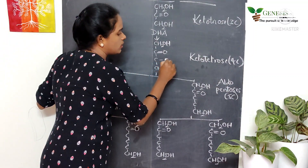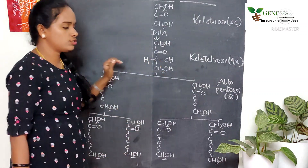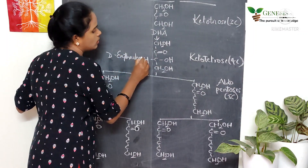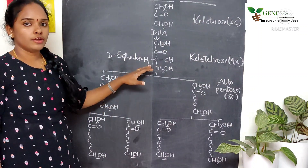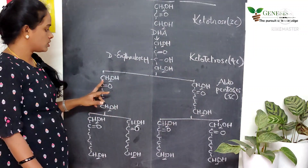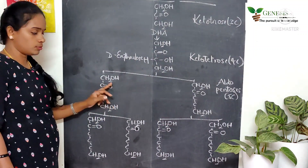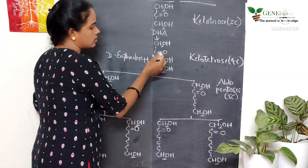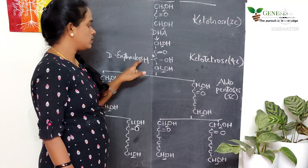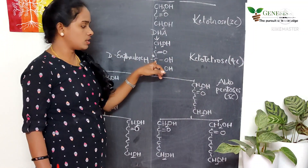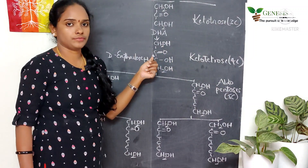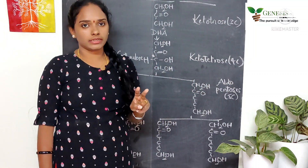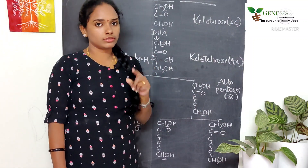Since these are D-forms, the farthest carbon must contain OH on the right side and H on the left side. This compound is D-erythrulose. From D-erythrulose we have two derivatives containing five carbon atoms with ketone as the functional group. D-erythrulose contains one chiral center, whereas aldotetroses (erythrose and threose) contain two chiral centers each. In ketotetroses, erythrulose contains only one chiral center.